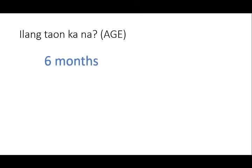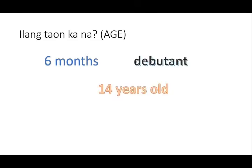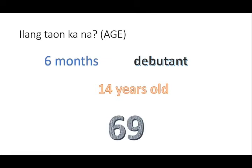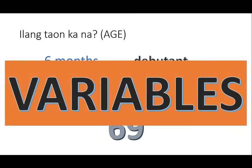Another example: if you are asked how old you are, your answer should be in the form of age. These ages can be answered by saying six months, fourteen years old, eighteen (debutante), or sixty-nine years old. These are the variables of age.